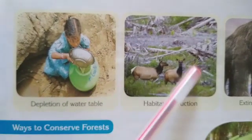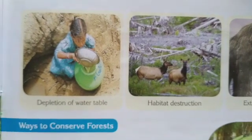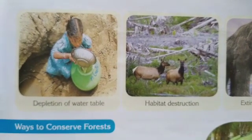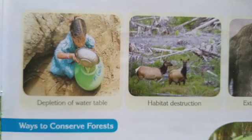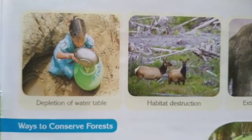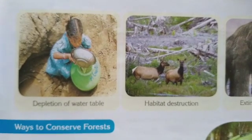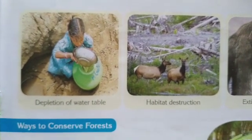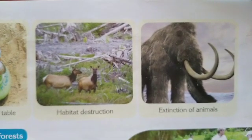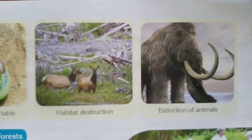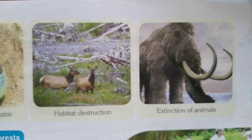Next is habitat destruction. Due to deforestation, different types of species — deer, lions, tigers, and other endangered species — disappear from our forests. Some animals have gone extinct in India and across the world, such as elephants becoming endangered.